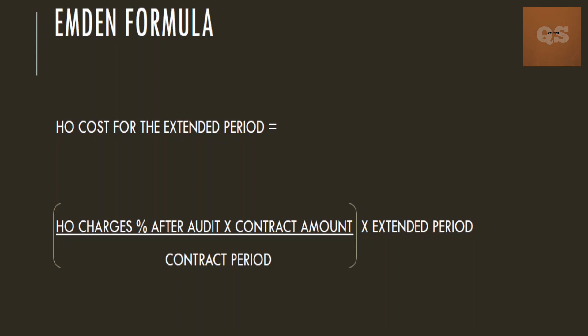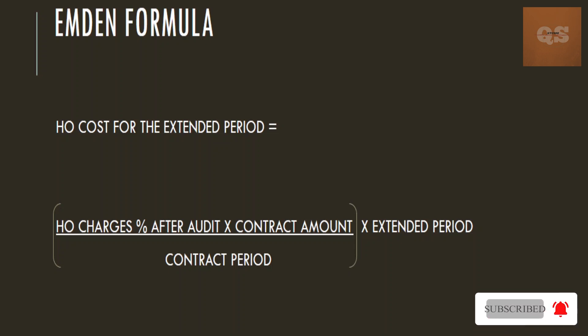The Emden formula is: head office charges percentage (after audit) multiplied by contract amount, divided by the contract period, multiplied by the extended period. Once you find out the total expenses after audit, that amount divided by your total contract amount gives your head office charges percentage after audit. So if X is your total amount spent in the head office and Y is your contract amount, then (X divided by Y) multiplied by 100 gives your head office percentage after audit, which is then used in the Emden formula.